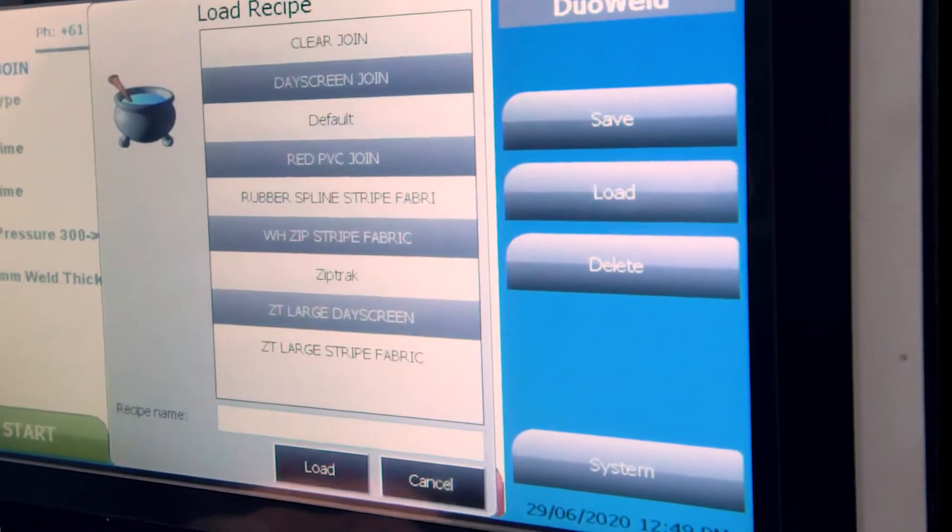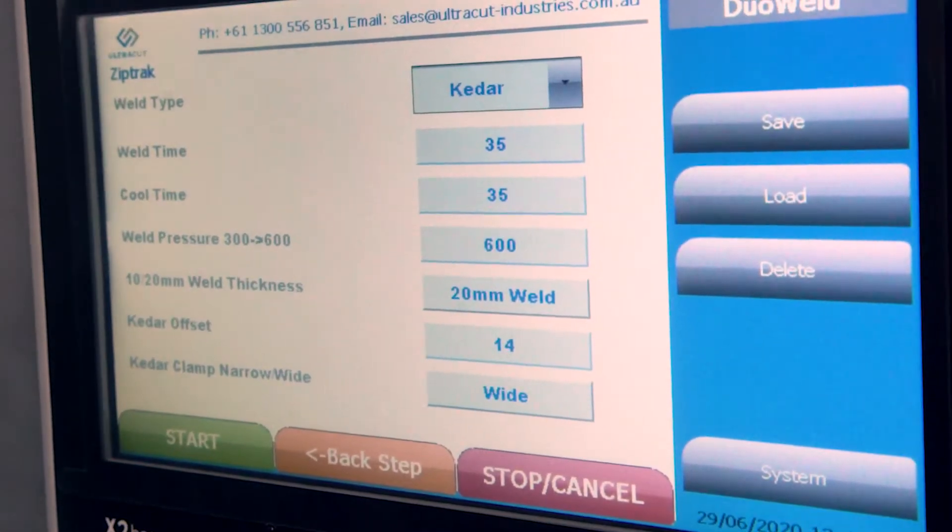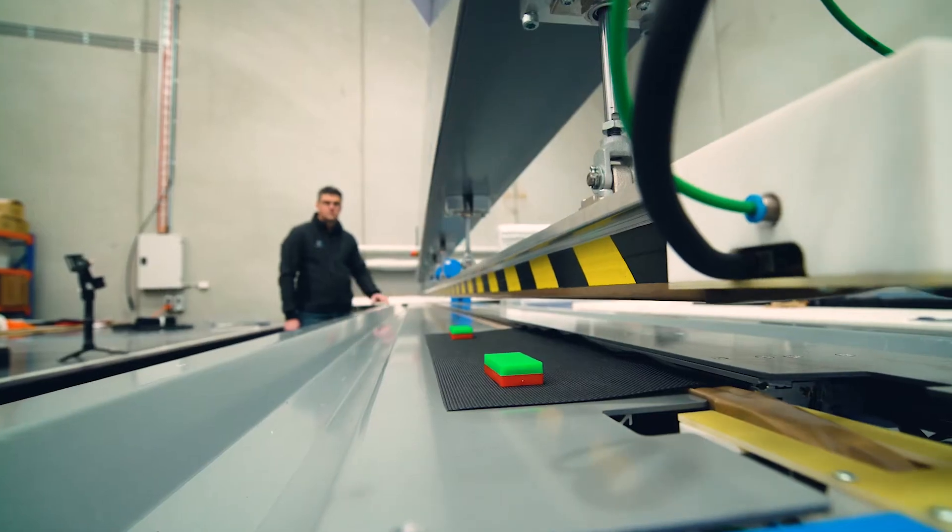You can save the configuration for each Kadar type and style of weld which can be reloaded easily later. This allows you to build a comprehensive library of weld settings to make sure you get the perfect weld every time.